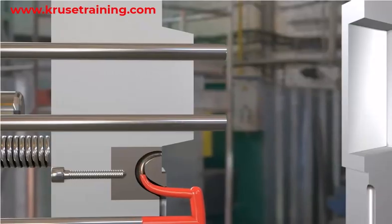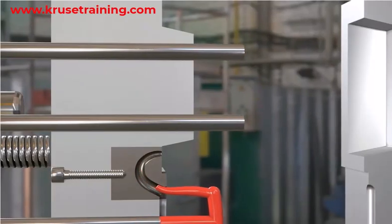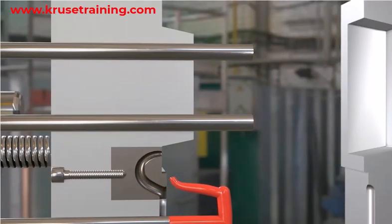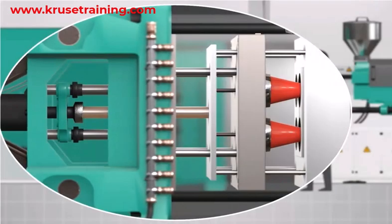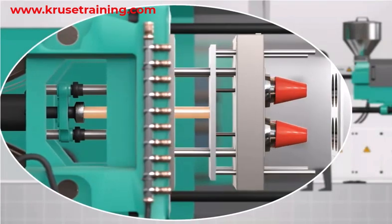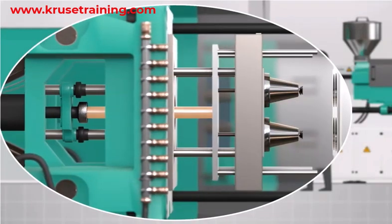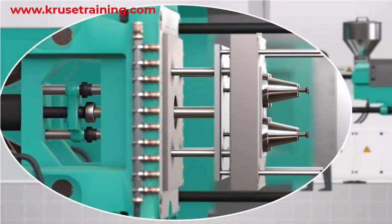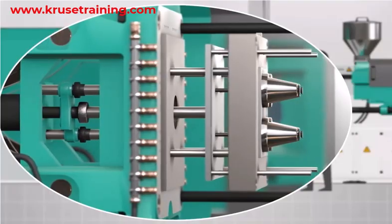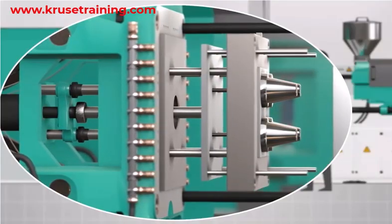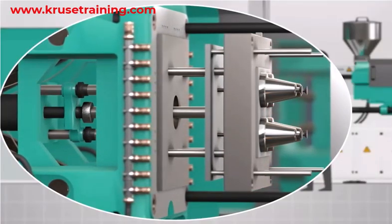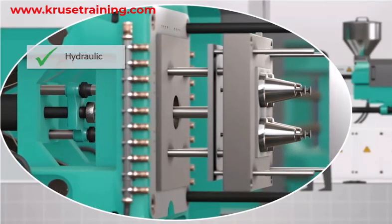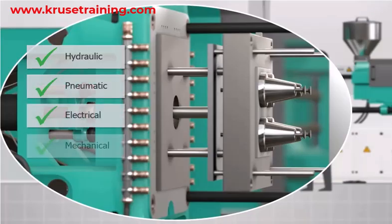These components include ejector pins. Ejector pins are cylindrical rods that are inserted into the mold to push the molded part out of the cavity. They are typically actuated by a hydraulic, pneumatic, electrical, or mechanical system.